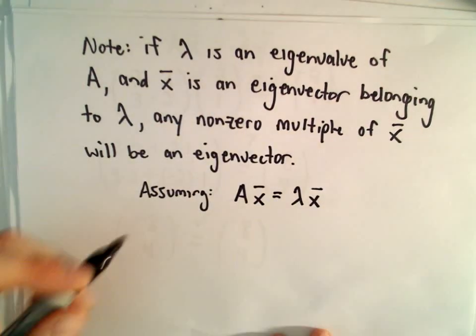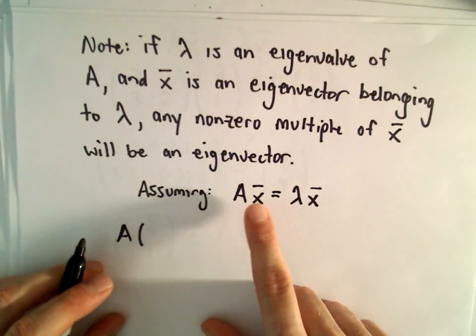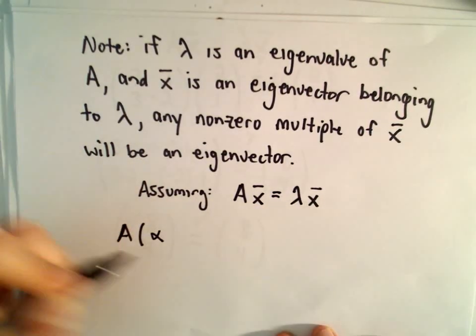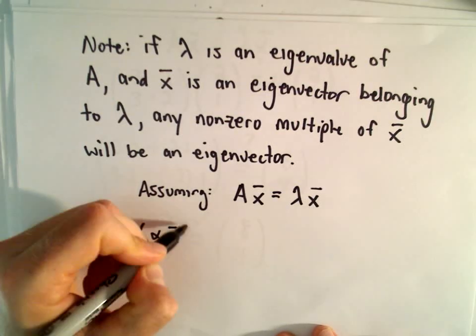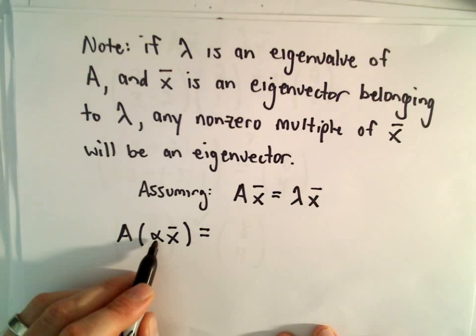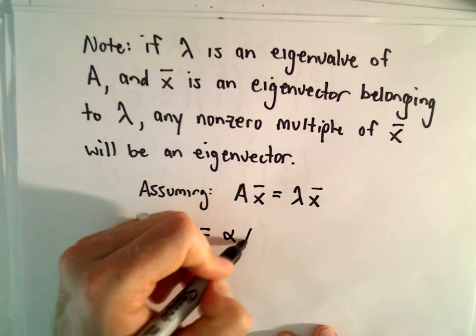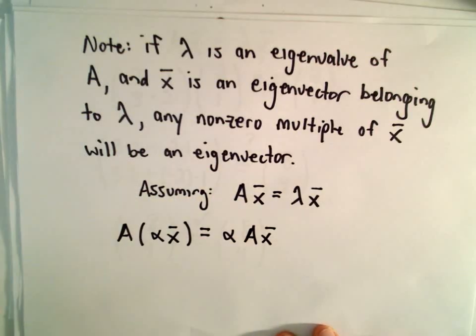We're already assuming that A times x equals λ times x. Okay, well, to show it in this case, if we take our eigenvector x and multiply it by some constant α, we can always simply rewrite this. Since α is a scalar, we can pull that out front and have α times A times x.